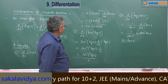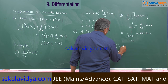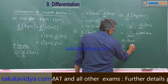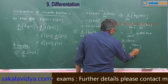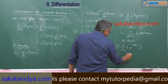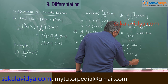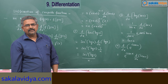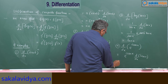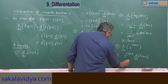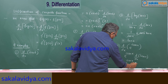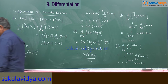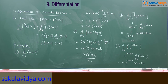One more example: d/dx of e^(cosec x). The derivative of e^x is e^x, so we get e^(cosec x) into d/dx of cosec x. The derivative of cosec x is minus cosec(x)·cot(x). So the answer is minus e^(cosec x)·cosec(x)·cot(x).